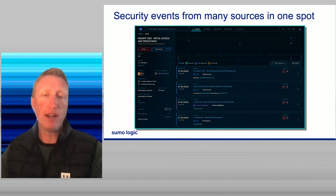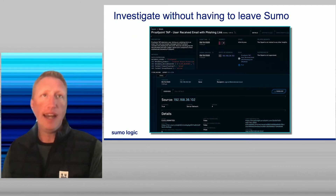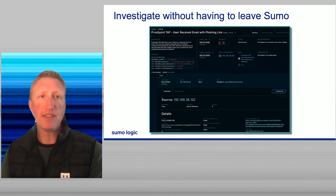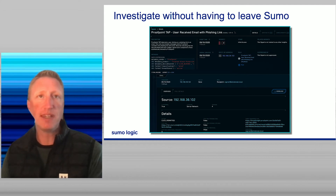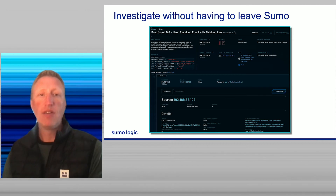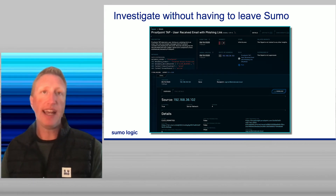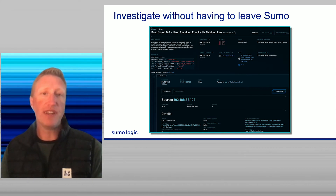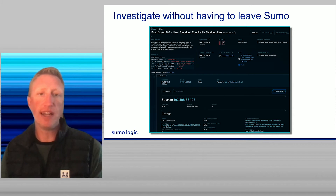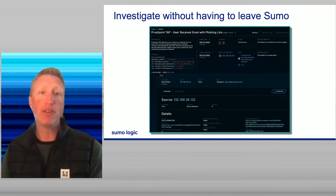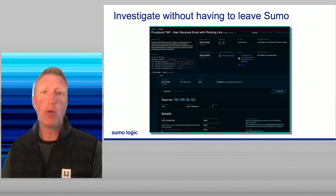Let's dive a level deeper — I'm now into the Proofpoint TAP data. I've brought all this data into one spot so that an analyst doesn't have to go to multiple systems, remember logins, or open 15 browser tabs. Furthermore, I've normalized that data, which means source_destination_ip is the source destination IP address for any technology — not just one. This makes it much easier when we get into the search functionality to pivot around and find out what else we need to know.